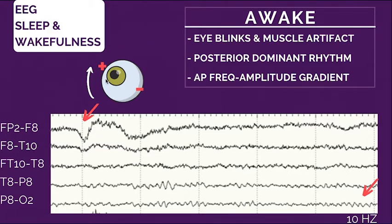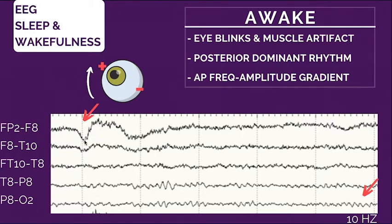When you close your eyes the cornea goes up and the retina goes down. The closest electrode to the eyeball — fp2 or fp1 depending on the side — will pick up positive activity. Since everything that goes up on the EEG is negative and everything that goes down is positive, fp2 picks up positive activity and it goes down on the EEG. That's called an eye blink artifact — everything on the EEG that doesn't come from the brain.